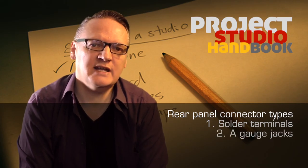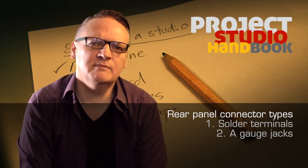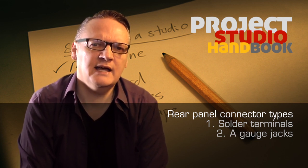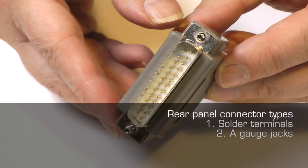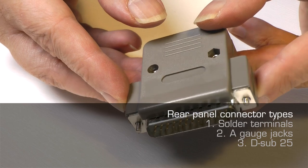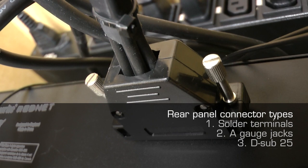Quarter inch A gauge jack connections are convenient, but connections can become intermittent, need cleaning, and it does inflate the purchase cost. D sub 25 pin connectors. These kind of connectors can be useful if your devices have them also.